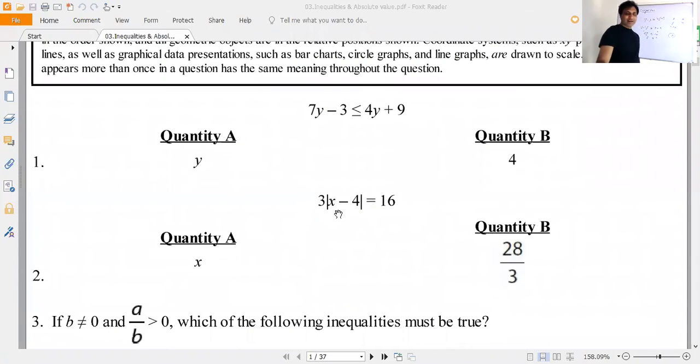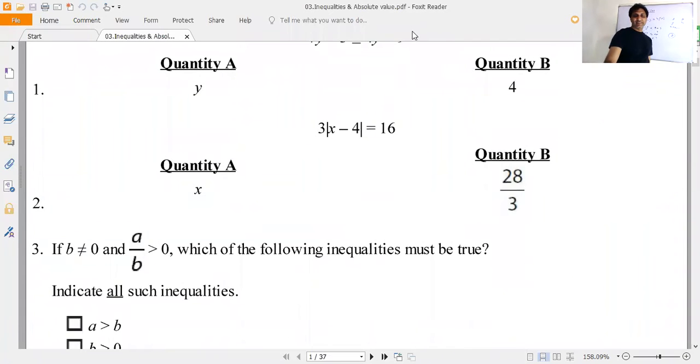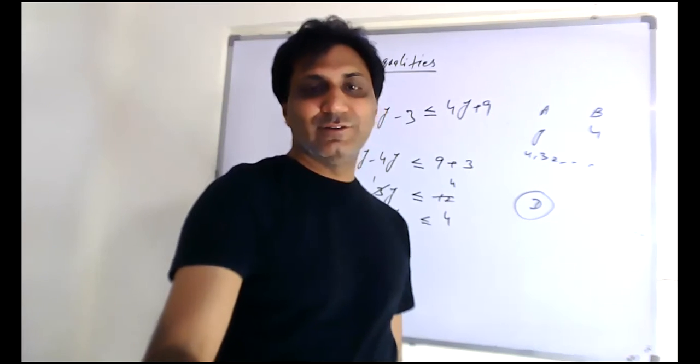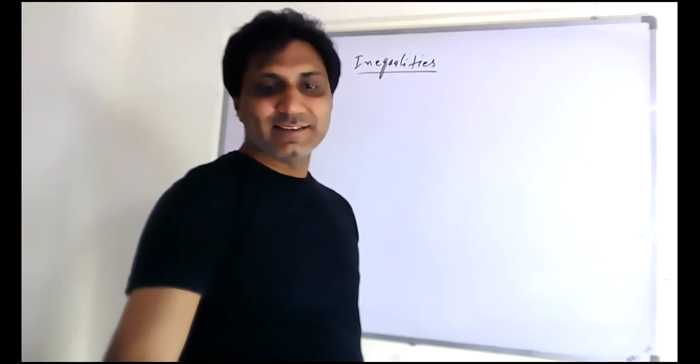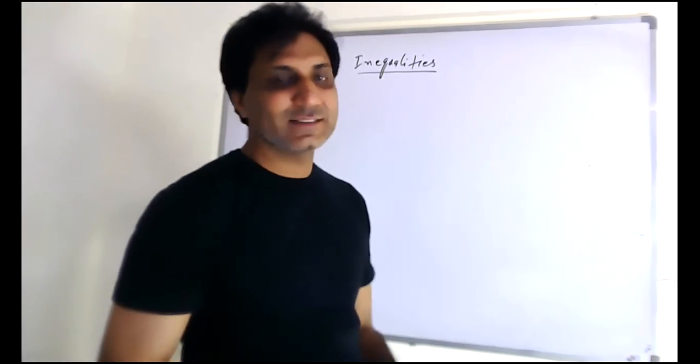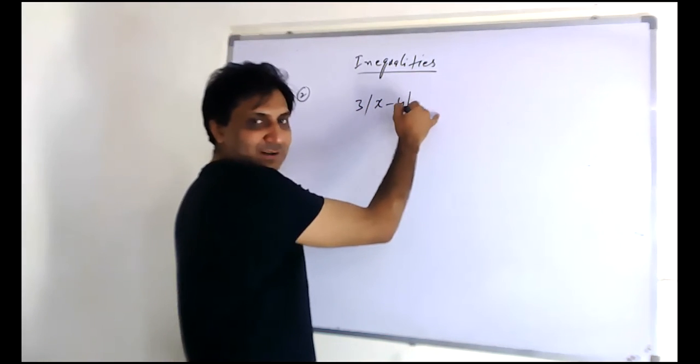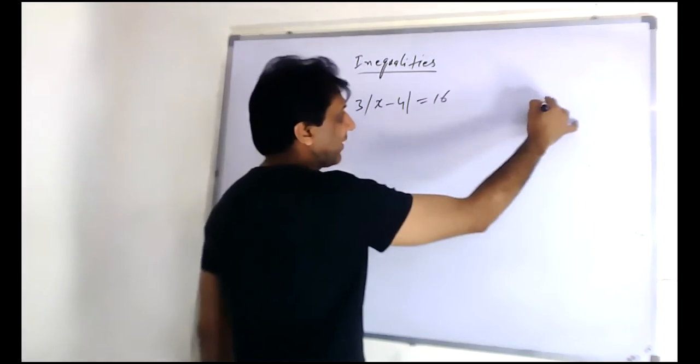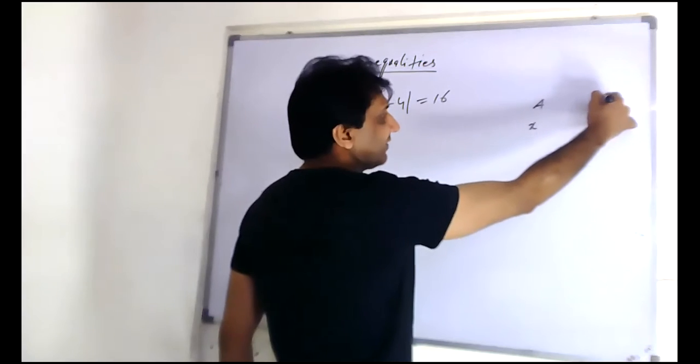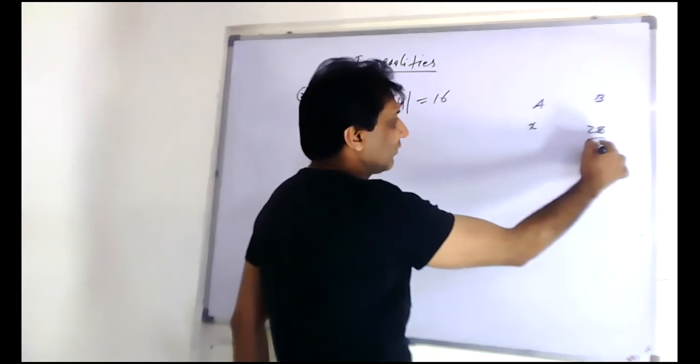3 times absolute value of x minus 4 equals 16. Column A is x and column B is 28 over 3. You have to tell which one is greater or less.